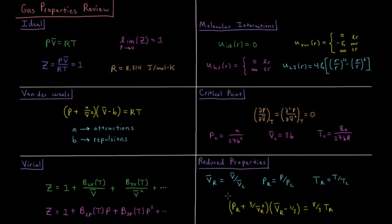And we get the law of corresponding states where the reduced pressure plus 3 over the reduced molar volume squared, times quantity reduced molar volume minus 1 third, equals 8 thirds times the reduced temperature.